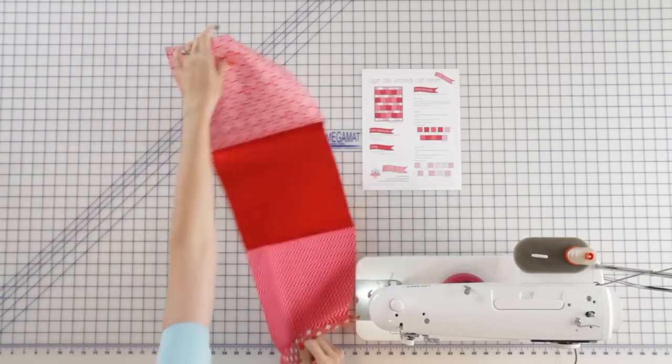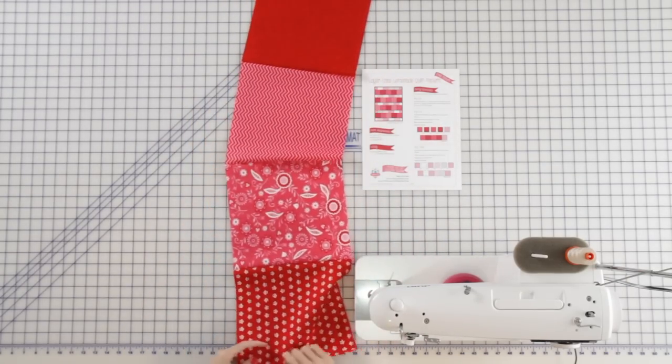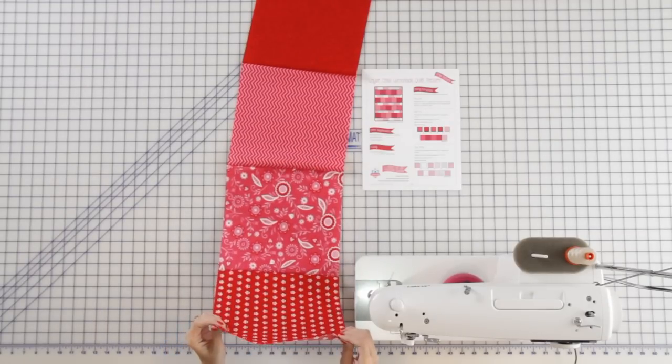So now you've sewn your first dark row together. You're going to want to repeat that to make a total of four dark rows. Each row should measure 10 inches by 48 inches.